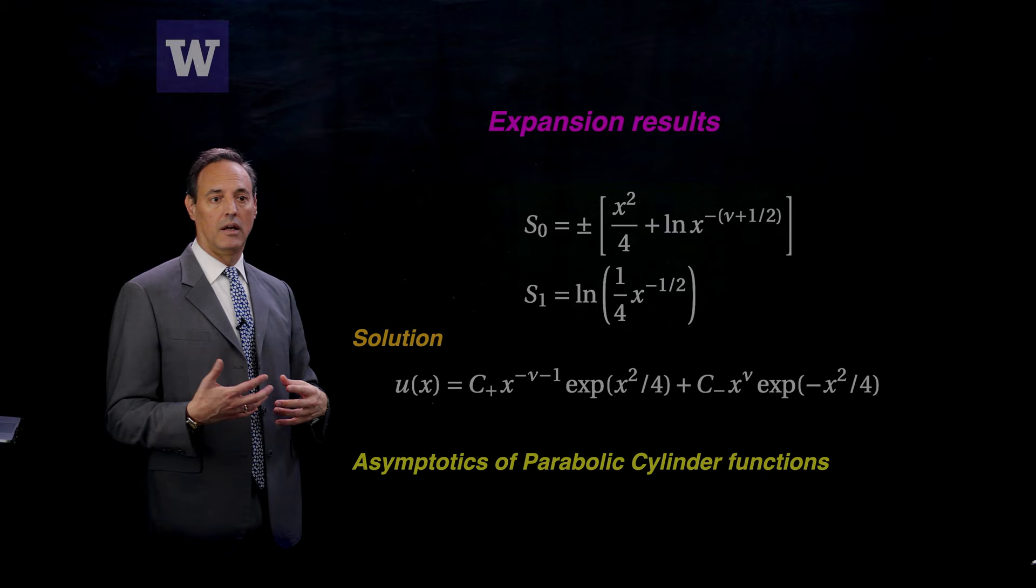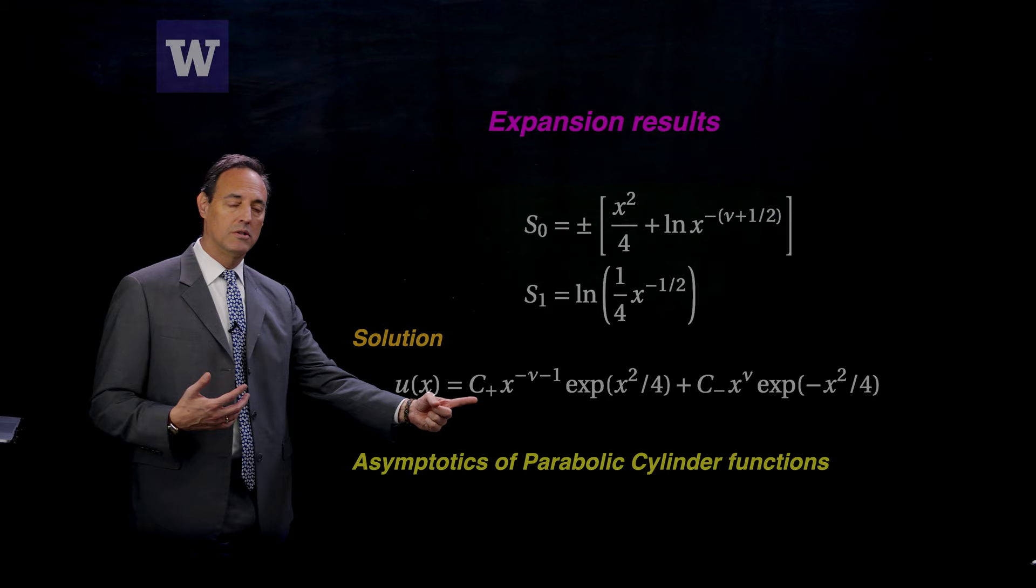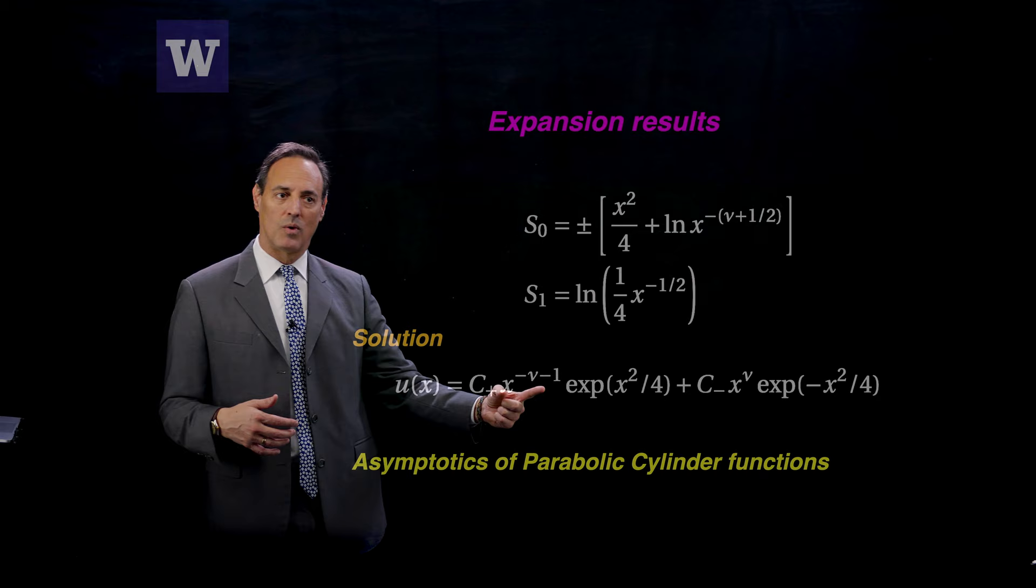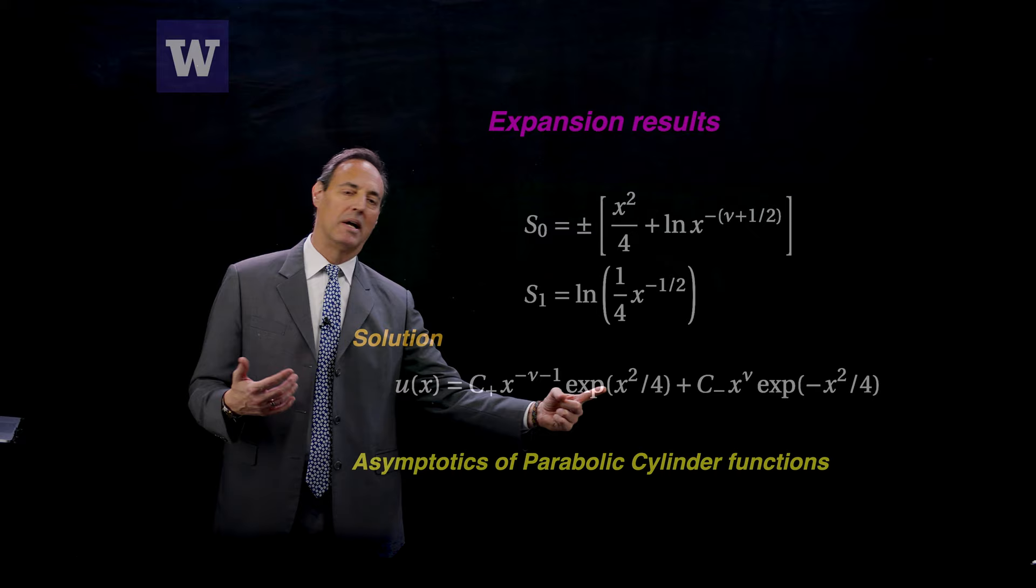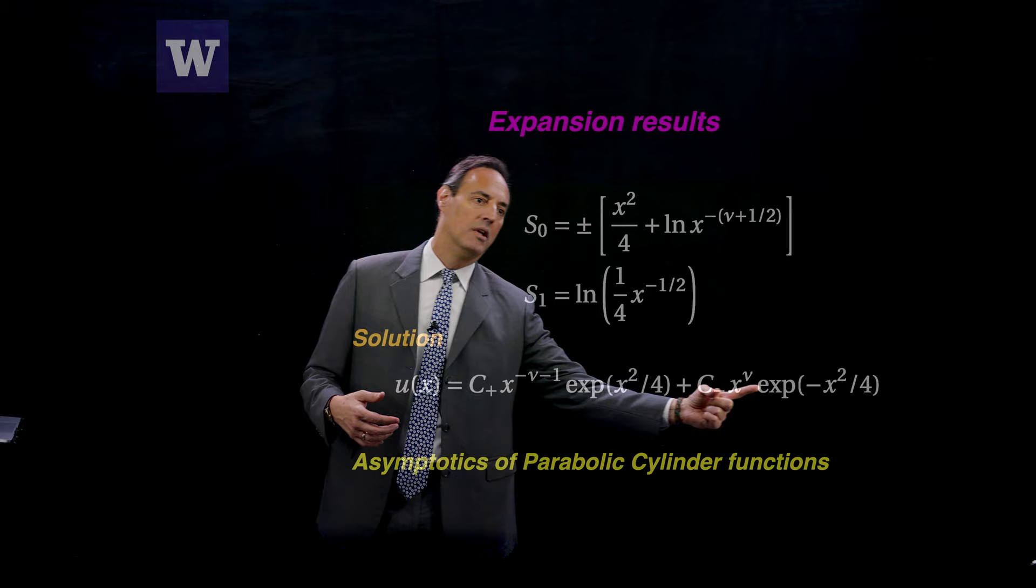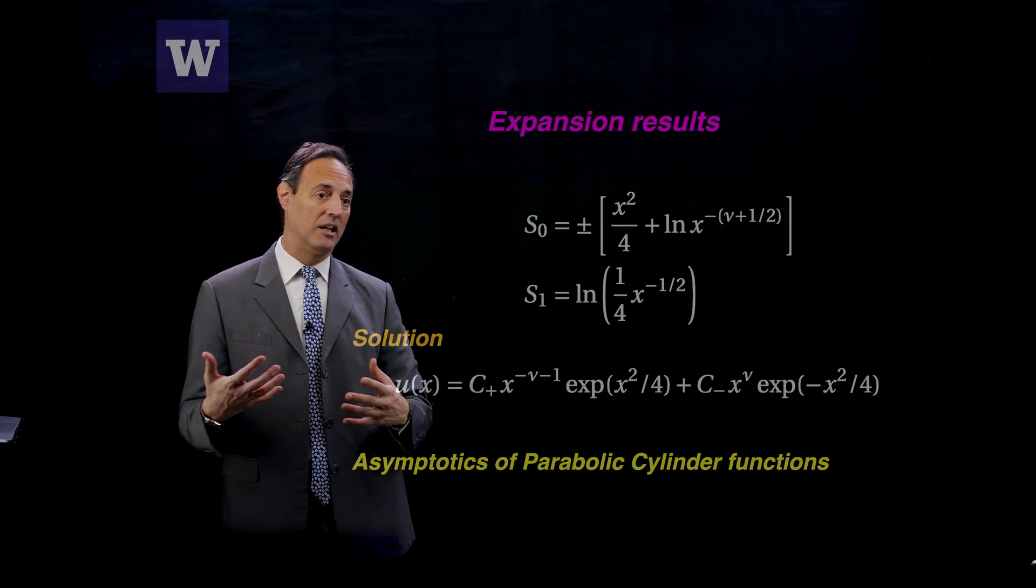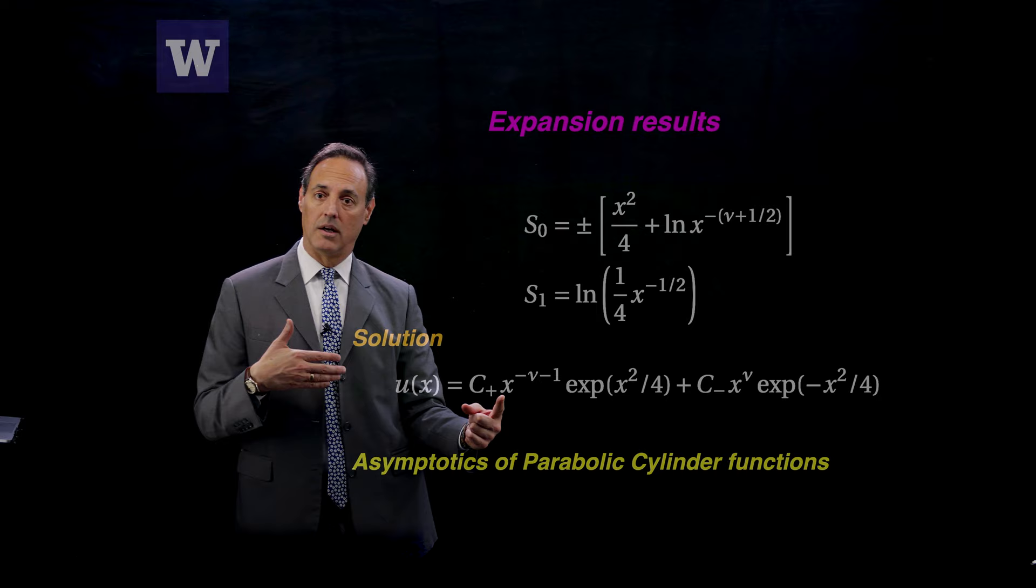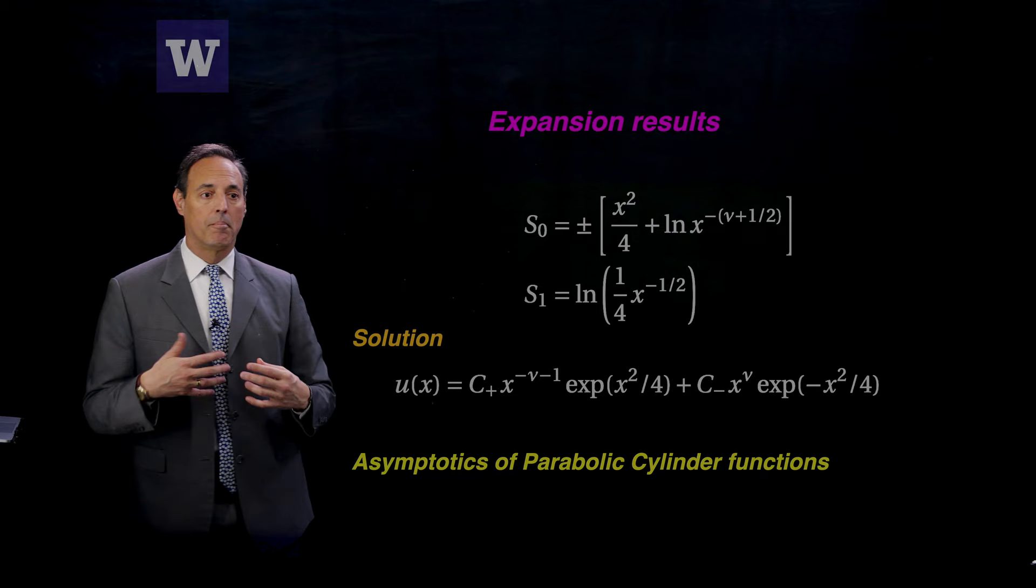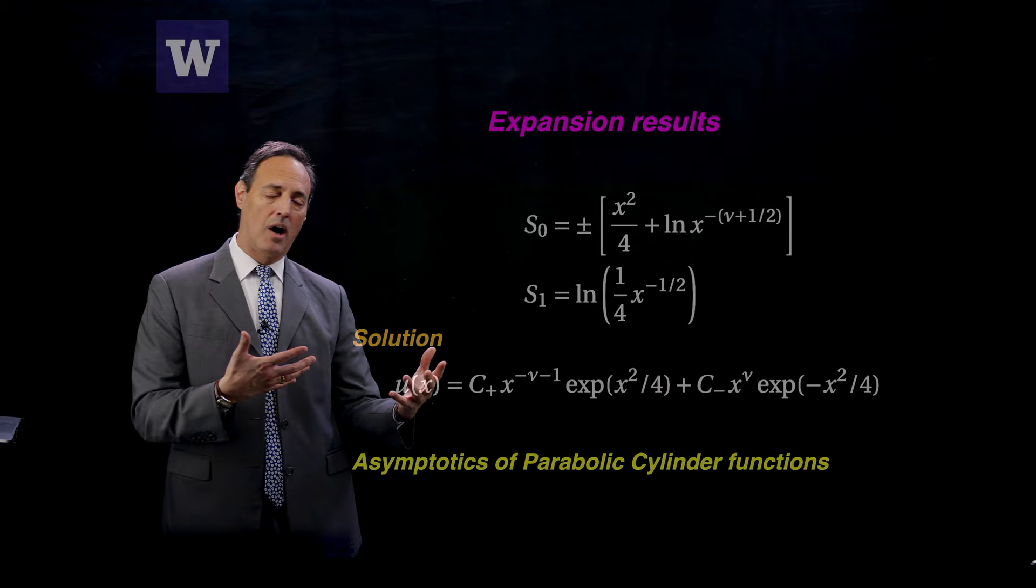So your solutions to this parabolic cylinder equation, an asymptotic approximation to it is given right by here. Two linear independent solutions. Here's a c plus, which is some constant, x to the minus nu minus one times a Gaussian, or actually there's no minus sign here, so it's e to the x squared. And then here, c minus x nu, and then that is the Gaussian, e to the minus x squared over four. So these are your two linearly independent solutions and you get different behaviors. One that's growing like e to the x squared, one that's decaying like e to the minus x squared, but also they have a x behavior out front, which also modifies what that growth looks like. So that's the asymptotics of these parabolic cylinder functions. And again, these are typically things that you'd have to just plot, but asymptotics just gives you this representation, which is very understandable in these regimes.